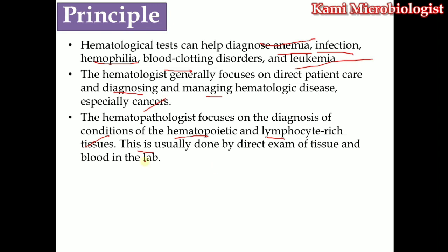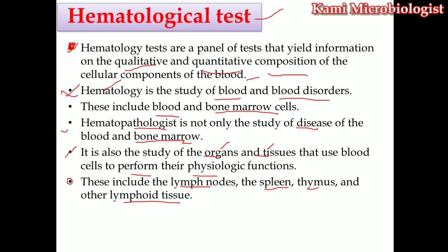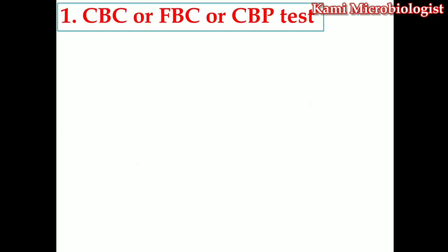We take tissue or blood, stain it, and process it so we can see the structure in detail. This is an overview of the principles of hematology tests. In the next video lecture, we will talk about CBC, FBC, or CBP in detail — what tests are included in CBC, why doctors recommend it, and for what purpose we perform it. Thank you so much for watching this video.